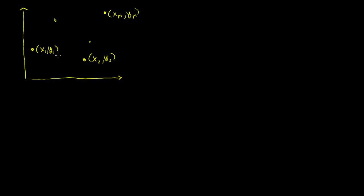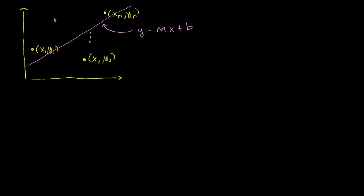What we saw is that there is a line that we can find — a line that minimizes the squared distance. That minimizes the squared distance. So this line right here, I'll call it y = mx + b. There is some line that minimizes the squared distance to the points.